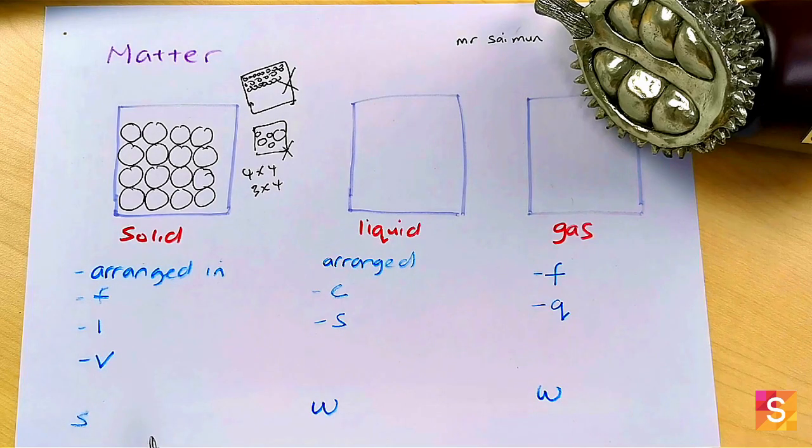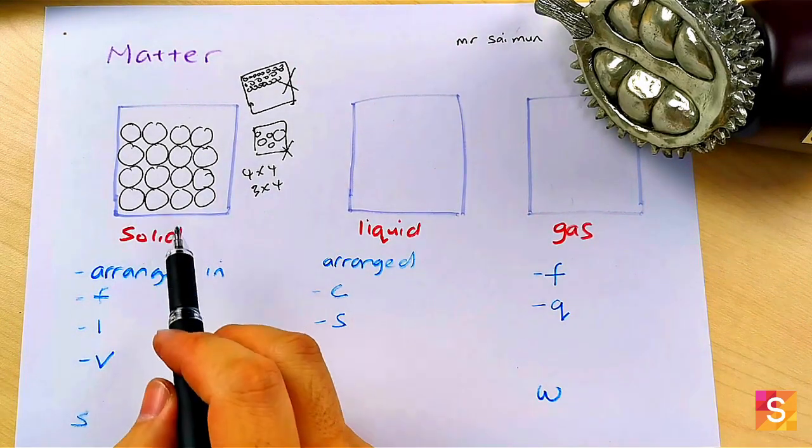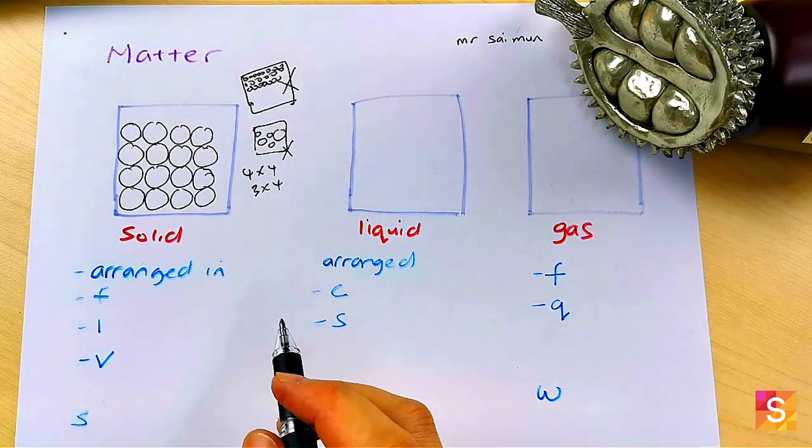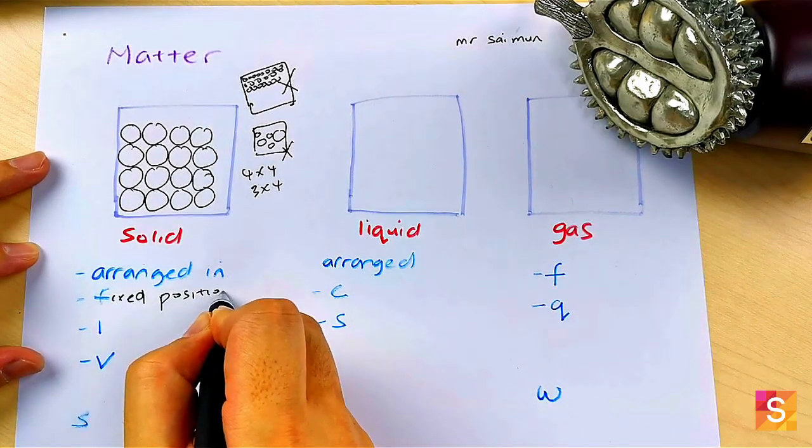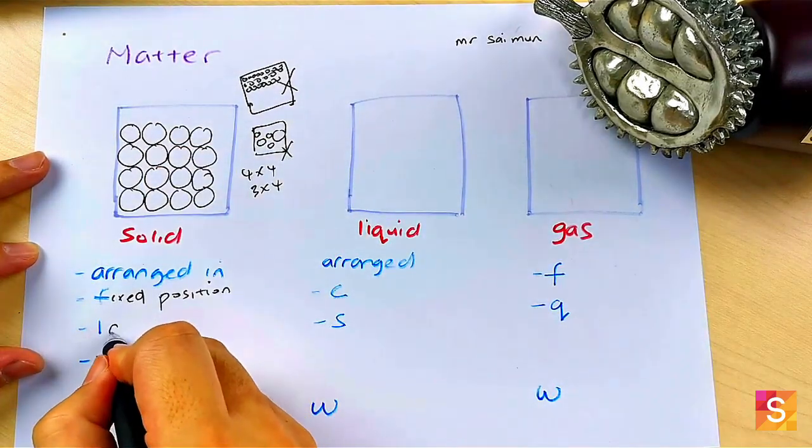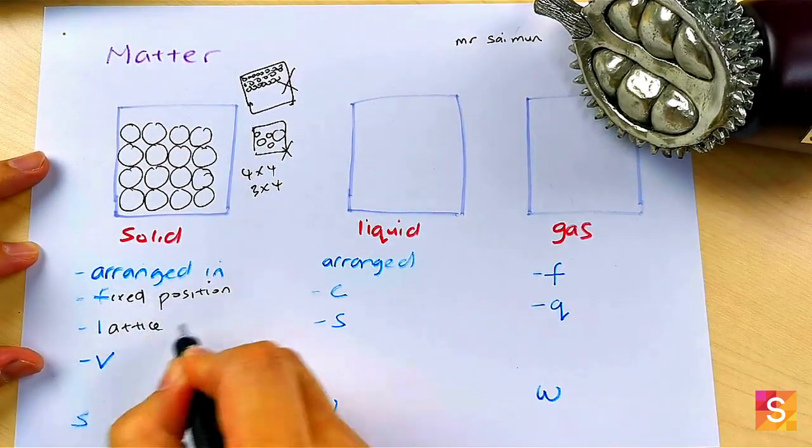So once again, four times four or three times four is good enough. Then they will ask you two or three marks in the exam, what is the arrangement. So you can say they are arranged in a fixed position.